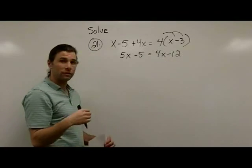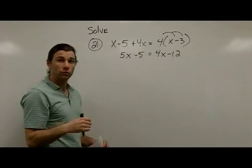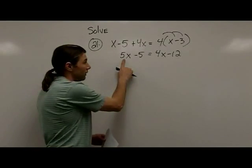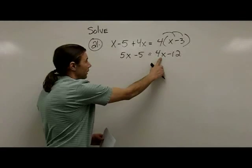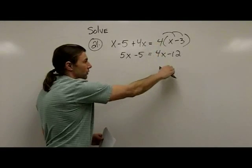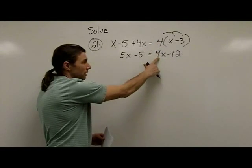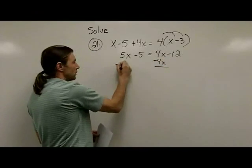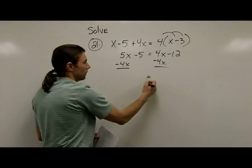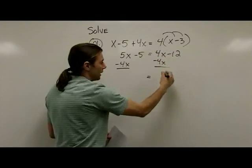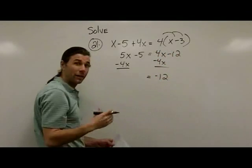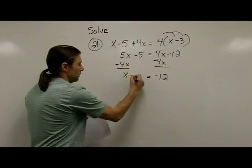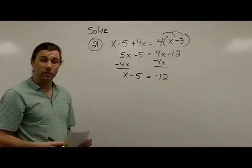Now both sides are simplified. I move on to step 2, which is to check if I have variable terms on both sides. In this case, I do — I have 5x on the left side and 4x on the right side. So I need to make that 4x on the right side disappear by subtracting it from both sides. On the right side, I have negative 12 left over. On the left side, I have x minus 5.